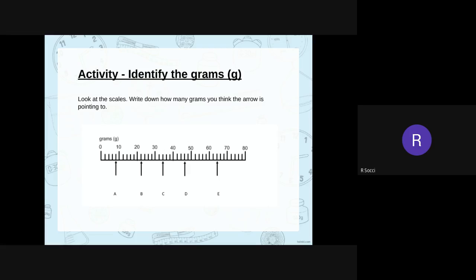Okay, this is an activity now that I would like you to do. So I'd like you to have a look at these scales. Now these scales are in grams as you can see there. I'd like you to have a look at the arrows. What number is the arrow pointing to? So if you were using your scales at home, if you've got scales, you could see what gram it would be on. Have a go at writing these down in your book.